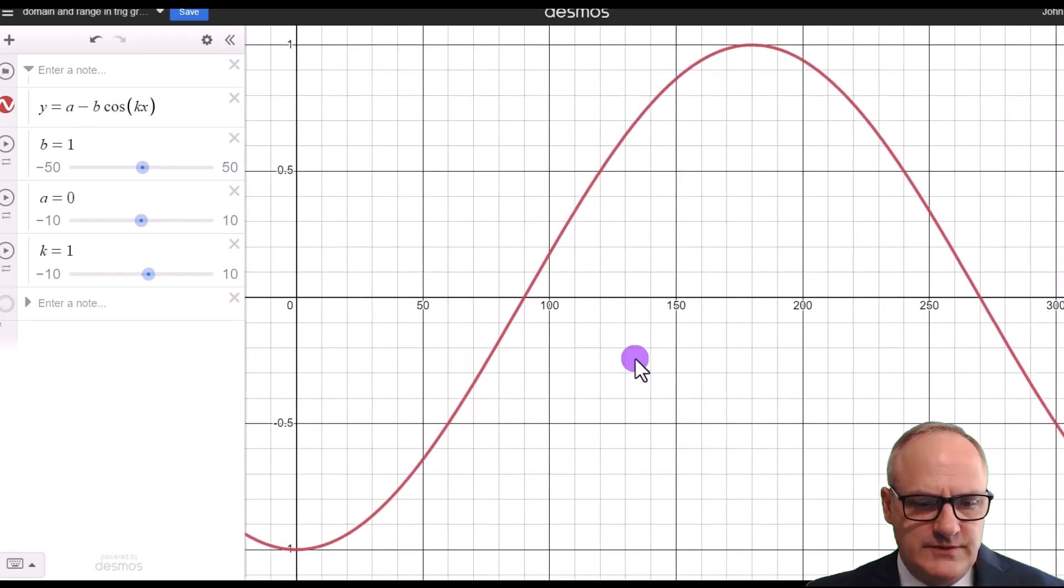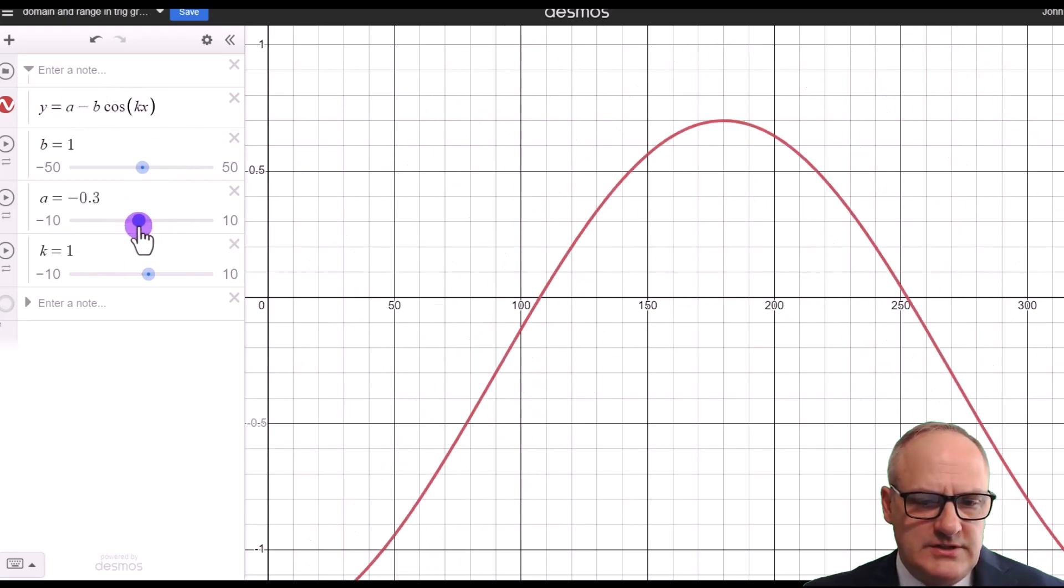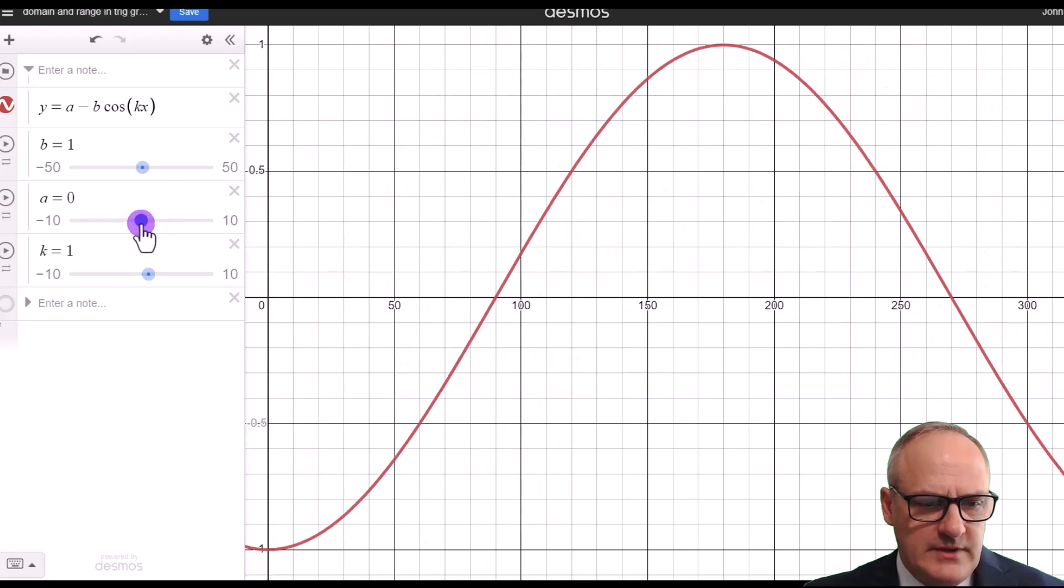Let's just move this so we go back to our 0, and we've got our k is 1, so we've just got cos x. Now let's just look at what the a does. And what it does, you can see, is it moves our graph up and down.